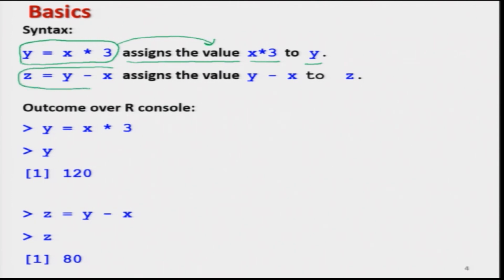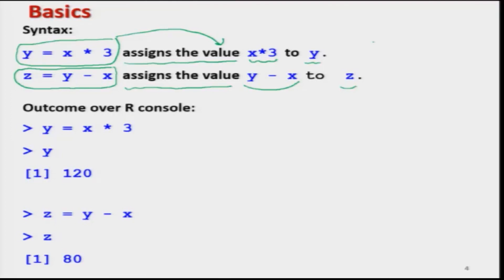After this I am writing z equal to y minus x, meaning the value of y minus x is assigned to z. Once I have typed a command or syntax on the slide, my next objective will be to show you how to execute it on the R software. I will do this in two steps: first I will type those commands on the R software and show you the outcome, and then I will take a screenshot of all the operations on the R software and paste it on the slide. So you can see here I have given these two syntaxes and now I try to execute them on R software.